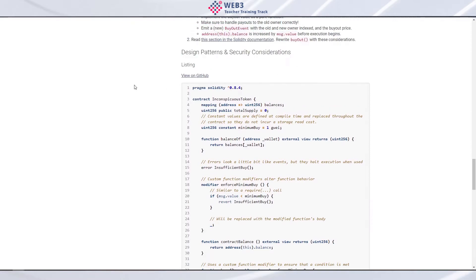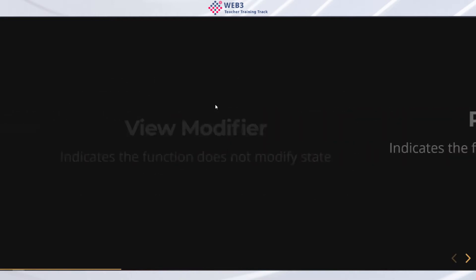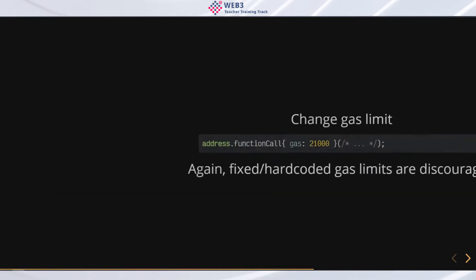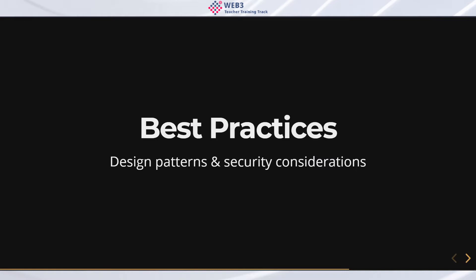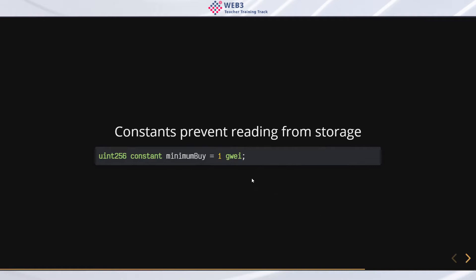Let's move on to design patterns and security considerations. We have a couple of keywords to make contracts use less gas. For example, using the `constant` keyword means the compiler replaces that value at compile time instead of reading it from storage. It's essentially the same concept as constants in other programming languages — a good way to avoid magic numbers and make your code more maintainable and readable.